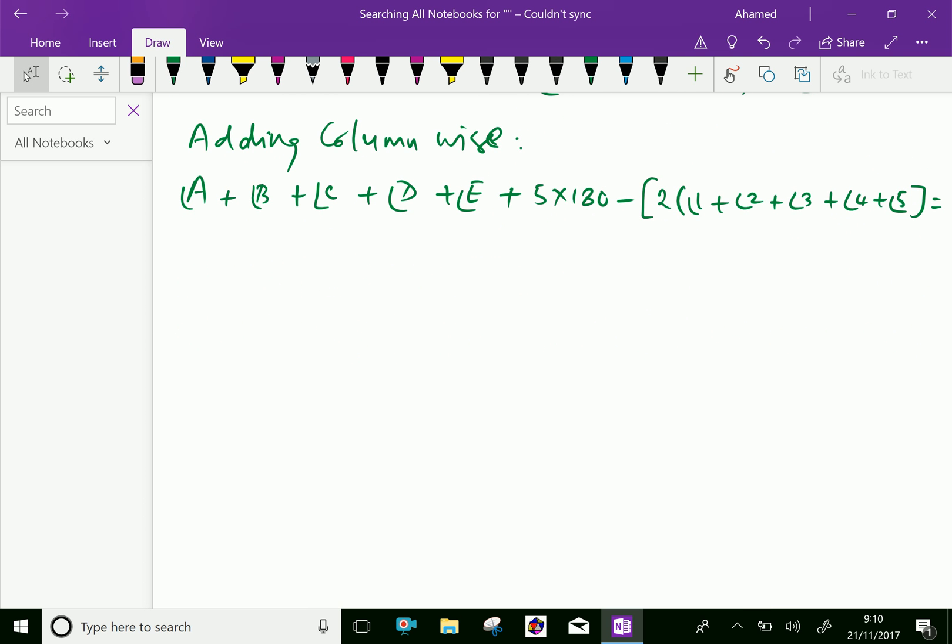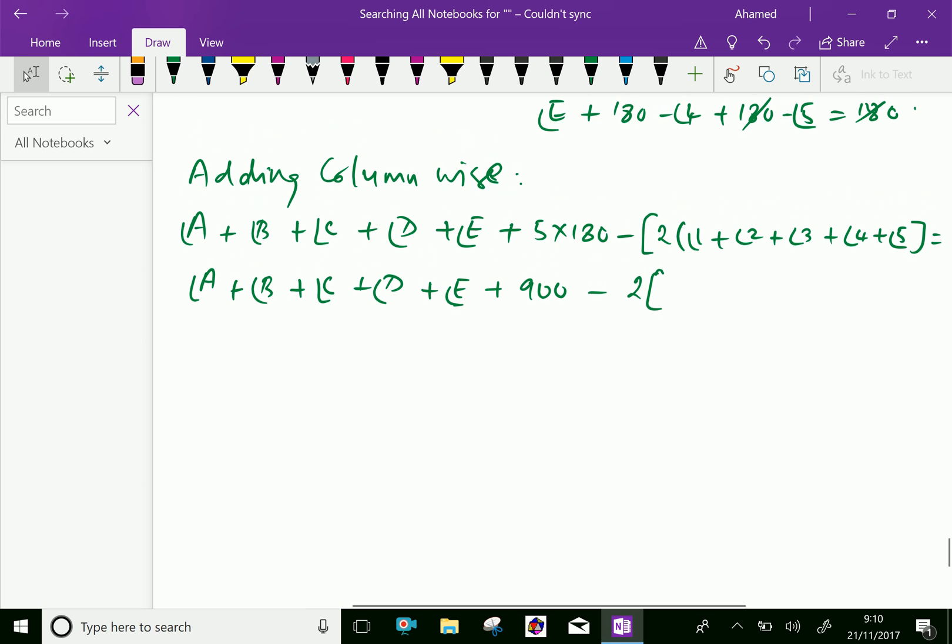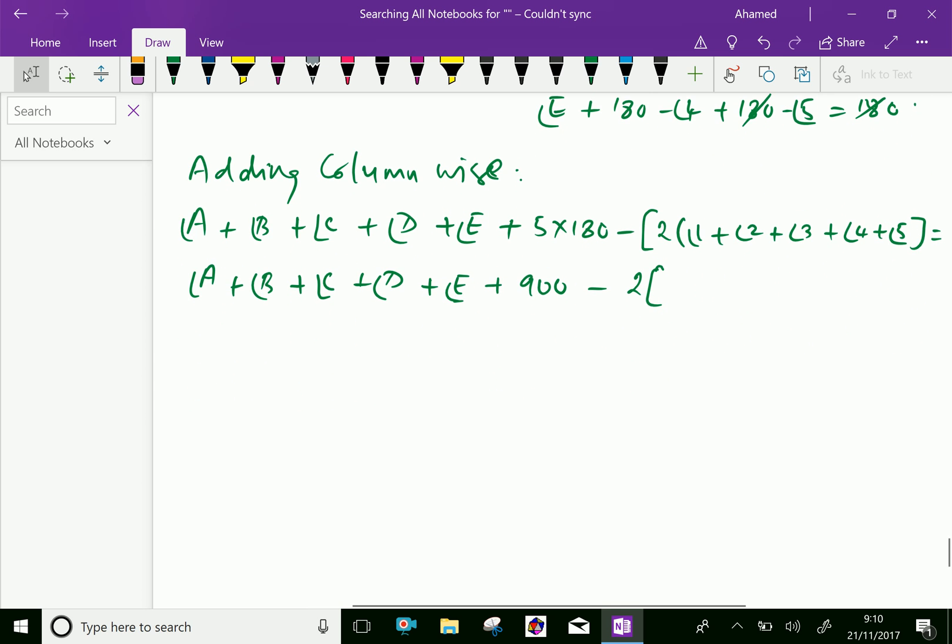Now, angle A plus angle B plus angle C plus angle D plus angle E, that what we want, plus 5 into 180 is 900, minus 2 into angle 1 plus angle 2 plus angle 3 plus angle 4 plus angle 5 is total interior angle sum of a pentagon, which is 540, equal 0.